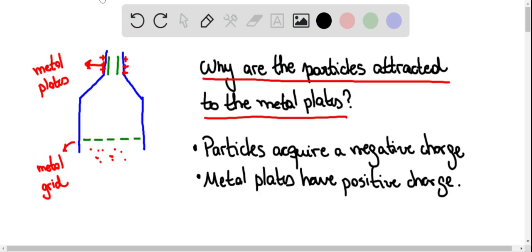So notice that alternative A says that the particles are negatively charged, which is true. But also alternative C says that the plates themselves are actually positively charged, which means that they are going to attract each other.